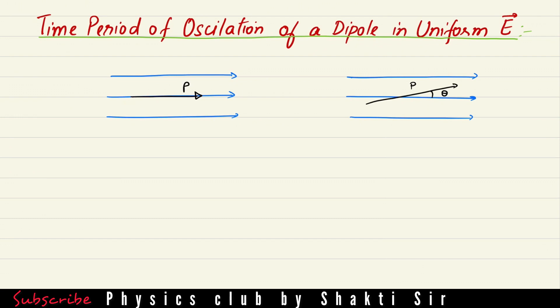Welcome back to Physics Club by Shakti Sir. In this lecture we will discuss the time period of oscillation of a dipole in a uniform electric field. The diagrams show uniform electric field lines in blue color, and a dipole coinciding with the direction of the electric field, denoted by p. The angle between the dipole and the electric field lines is zero. But if we tilt the dipole with some small angle theta, as shown in the diagram, we give it a small tilt in the anti-clockwise direction.